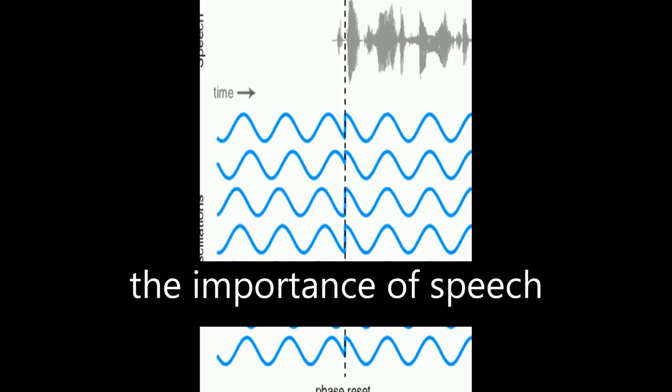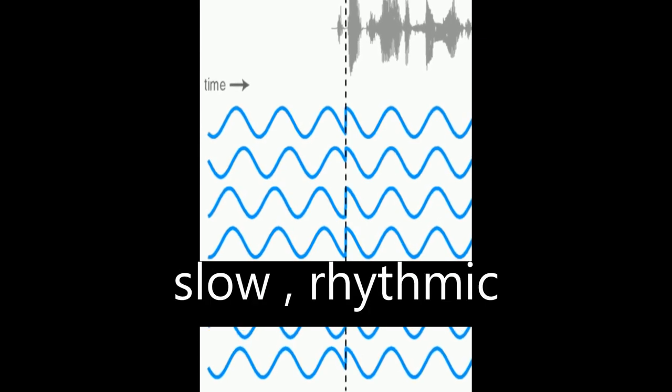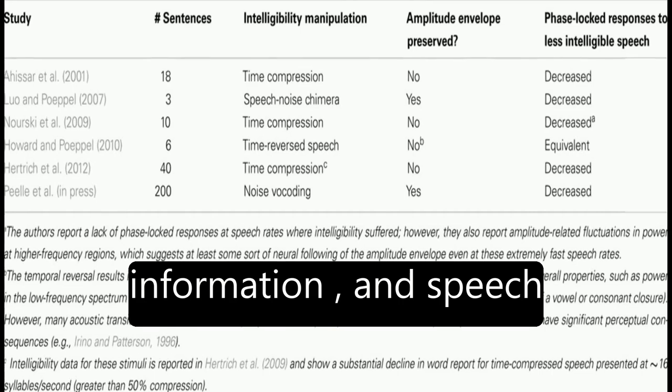The article discusses the importance of speech rhythm and how it is conveyed through amplitude modulations and slow, rhythmic information. It highlights that this information contains important markers for place and manner of articulation, segmental information, and speech rate.